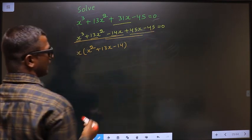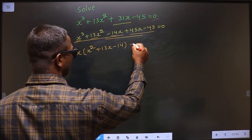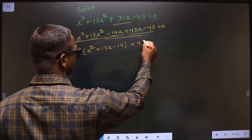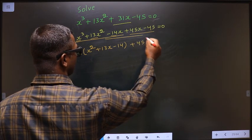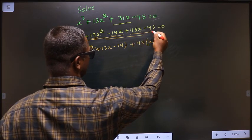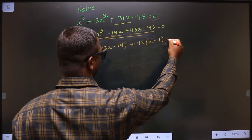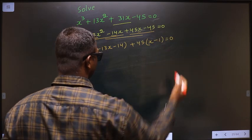From these two terms, what can be taken out common is 45. Here I get x and here I get 1, equal to 0.